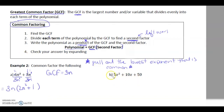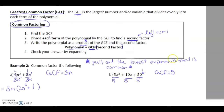For b, we have the trinomial 5x squared plus 10x plus 50. What does each term divide by? The coefficients 5, 10, and 50 all divide by 5. There's no x in the third term, so we don't include x — the variable must be common to each term. So the GCF is 5. Dividing: 5x squared over 5 gives x squared, 10x over 5 gives 2x, and 50 over 5 gives 10. Result: 5 times the quantity x squared plus 2x plus 10.